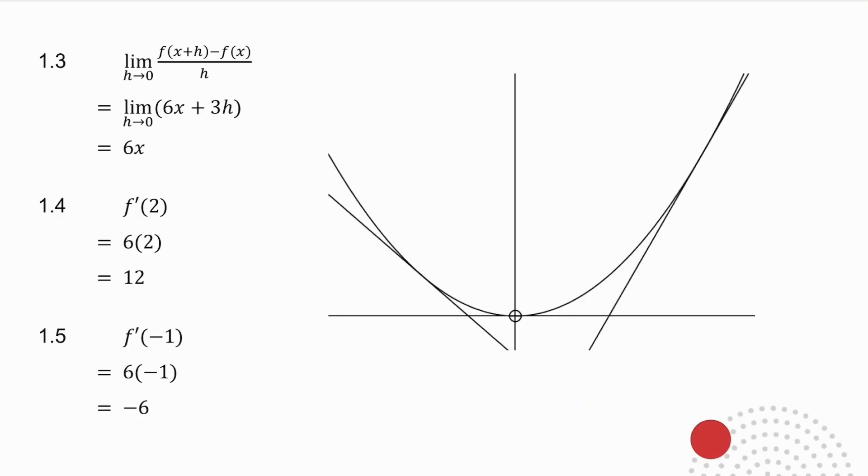I now ask you for the limit as h tends to 0 of the fraction you've just got. So it's the limit as h tends to 0 of 6x plus 3h. If I make h closer and closer to 0, what does this become closer and closer to? The answer is 6x. So what I've done is the following. Given the curve of f(x) equals 3x², I have found a formula for the derivative. I found a formula for the gradient of the curve.